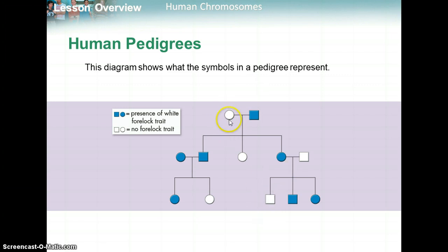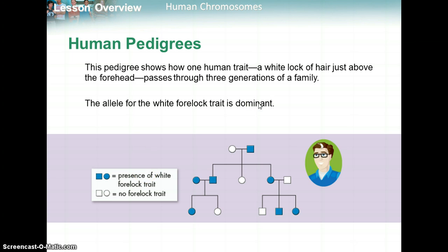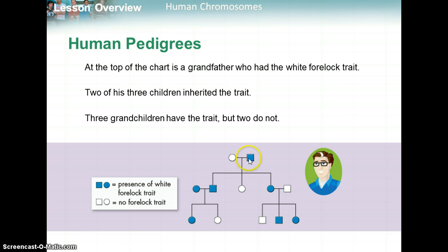We're going to look at the white forelock trait — a white lock of hair just above the forehead. This pedigree shows one human trait: the white forelock, which has a dominant type of inheritance. The blue individuals have the white forelock, and the white ones do not. At the top, the grandfather and grandmother had three children: a son and two daughters. The grandfather had the white forelock; grandma did not. The son does have it, the first daughter does not, and the second daughter does. About three out of five grandchildren have the white forelock.